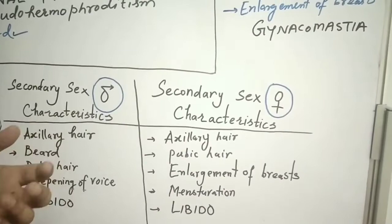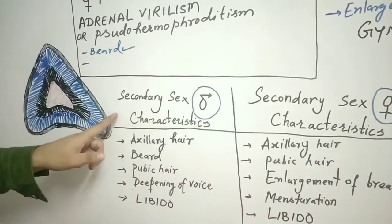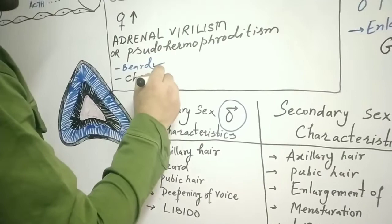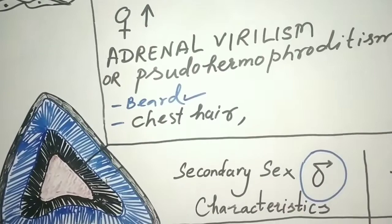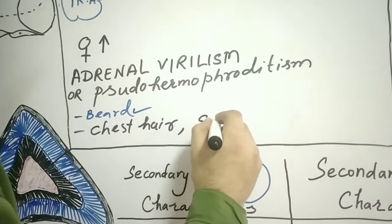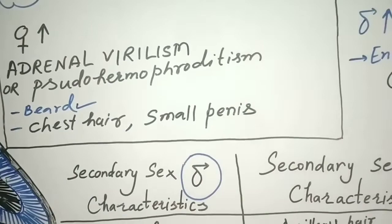In females with hypersecretion, the clitoris becomes very enlarged — we can say they develop a small penis-like structure. This was all about sex corticoids. Hope you understood well. Thanks.